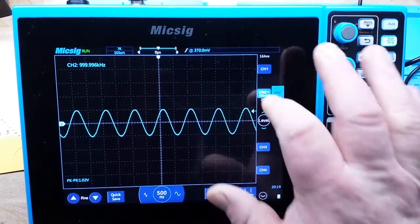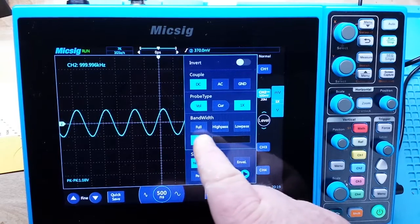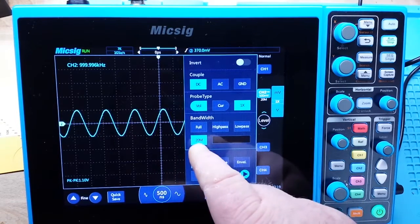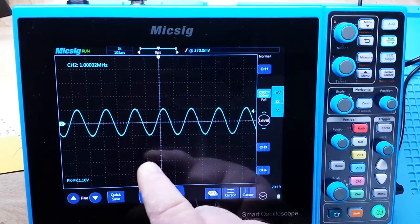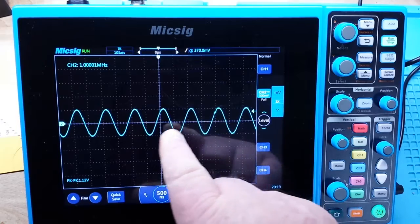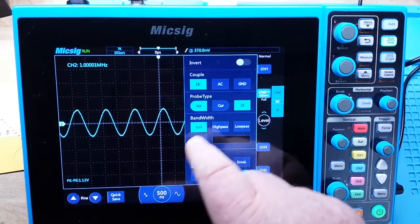One other thing to keep in mind is you have your bandwidth control. You can use full or a 20 meg limit. That will also eliminate some of your noise. If you take a look at this, now where we're in full bandwidth mode, you're seeing more noise on the signal. But if we go into that 20 meg limit, we're eliminating a lot of that higher frequency noise.